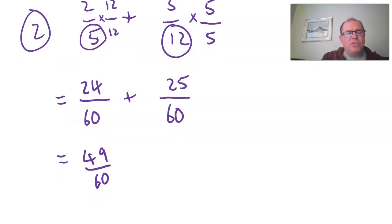Can you think of any numbers that go into 49 and 60 other than one? No, I can't either. So that's it. It's in its simplest form. We can leave it.